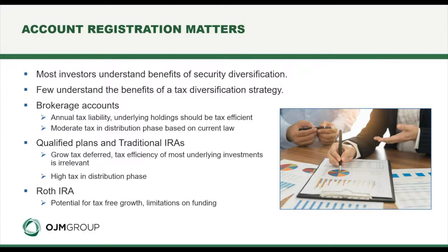Qualified plans and traditional IRAs grow tax-deferred, so the tax efficiency of the underlying investments is simply not relevant. As a result, you want to own the least efficient vehicles — bonds are an example. Mutual funds with a high rate of turnover are also appropriate holdings for IRA accounts.